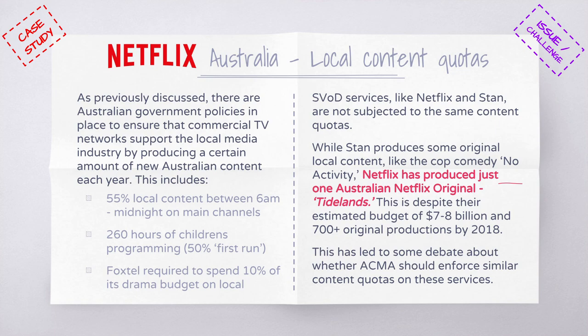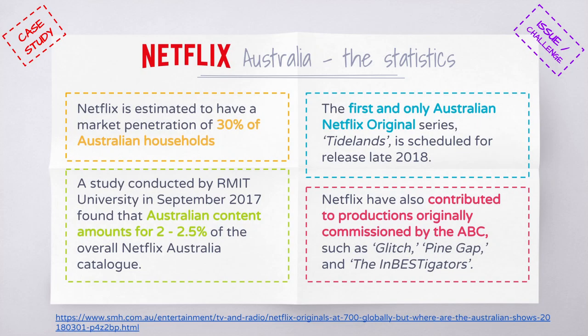This has led to debate about whether ACMA should enforce content quotas on streaming services. Netflix is estimated to have a market penetration of about 30% of Australian households. A study by RMIT in September 2017 found that Australian content on Netflix amounts to only about 2–2.5% — compared to the 55% local content requirement on television networks between 6am and midnight.